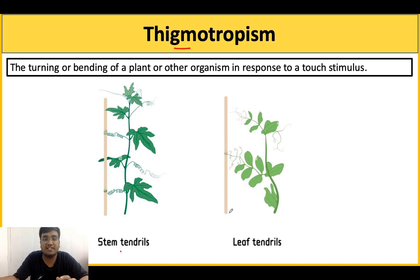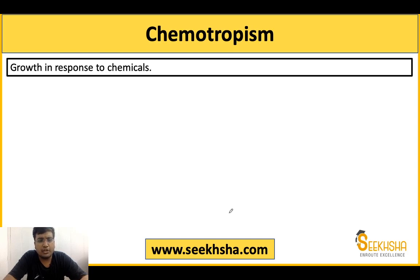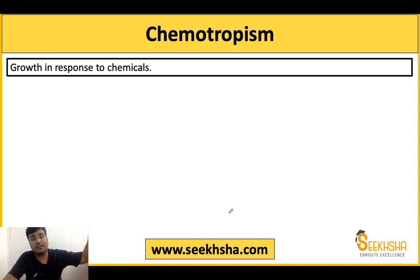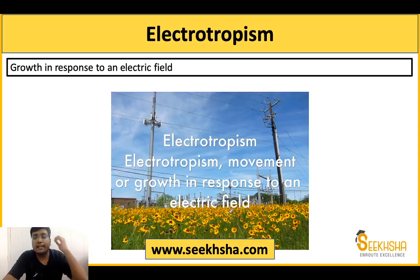If you use artificial chemicals — chemicals that the plant does not naturally produce — and apply them externally to influence the plant's growth response, that is called chemotropism. Chemotropism is the plant's growth response to chemical stimuli.